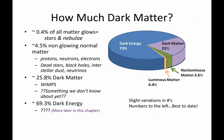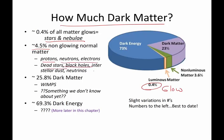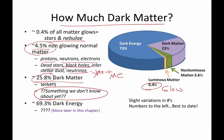How much dark matter is out there? If you took everything we know of in the cosmos, about 0.4% of it is luminous matter — stuff that glows, like stars and nebulae. About 4.5% is normal matter: protons, neutrons, electrons, dead stars, black holes, interstellar dust, neutrinos, you and me. Over 25% of what is out there is dark matter. It doesn't interact with light, it's made of odd particles called WIMPs, and it makes up about 25–26% of the universe.